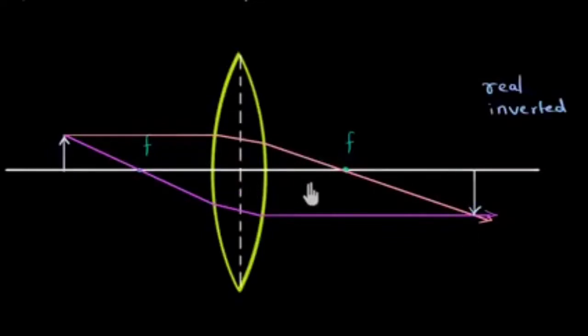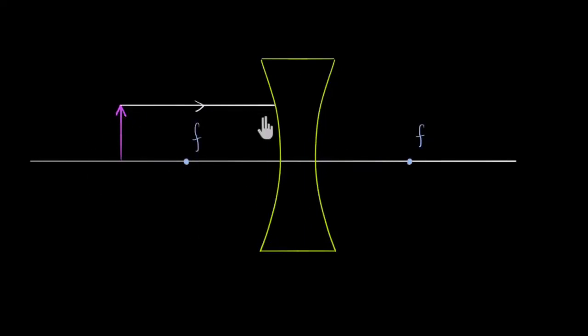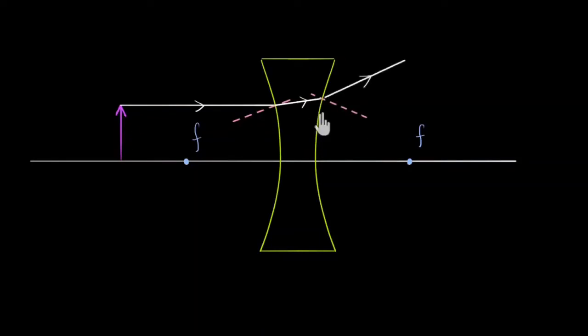Now we can see how the image is formed through the concave lens. The principal axis is drawn, and the pencil focus and image form are identified. We can see the image form through the concave lens using the principal axis and focal points.